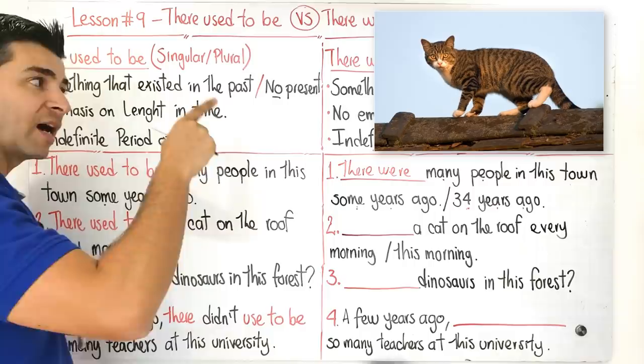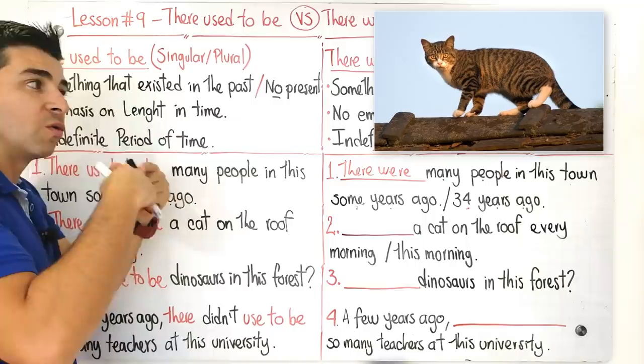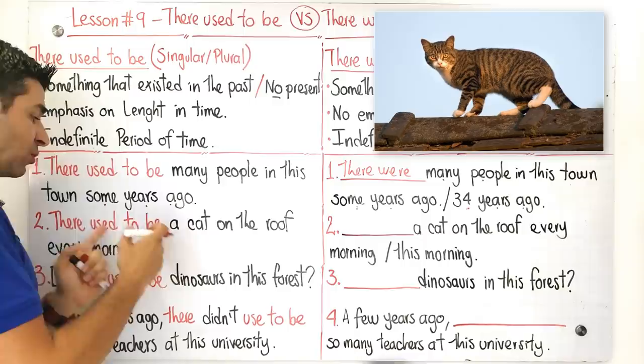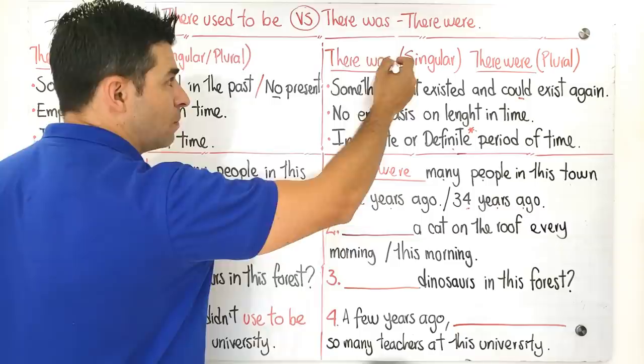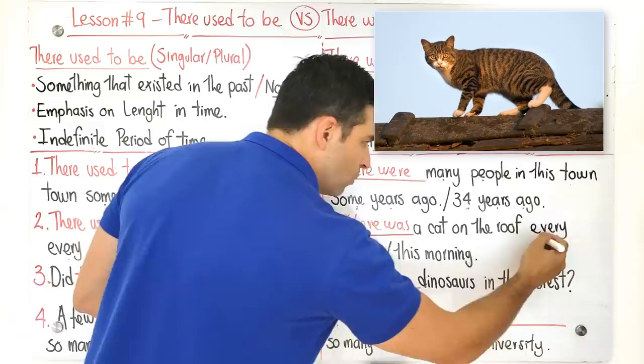Let's continue with number two guys, and this is gonna be the context. Analyze it please. There used to be a cat on the roof every morning. When I say this, it is because something that existed in the past and is not present. I don't know if the cat died or the cat is living in a different house, I don't know. We're talking about emphasis on the length in time when we say every morning, indefinite period of time too. But now that we have to adapt this sentence into a there was and there were sentence, we have to analyze it. So, in this case we're talking about a cat, so it's singular. In this case would be there was the correct option here. There was a cat on the roof every morning. But pay attention because when we say every morning it sounds weird. Even in Spanish it sounds weird too.